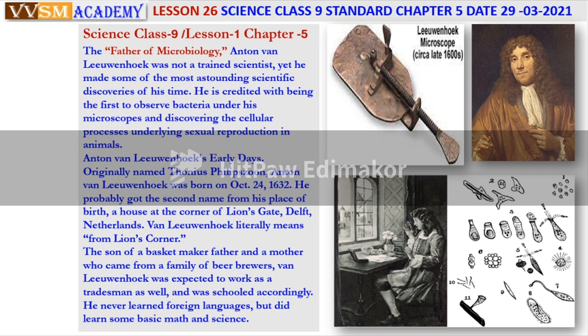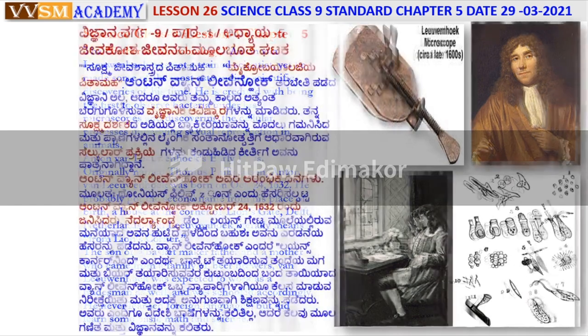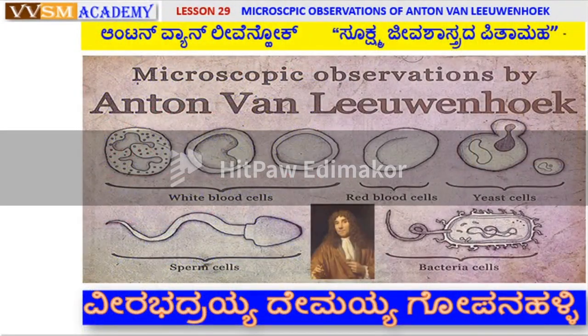I am telling you about Anton van Leeuwenhoek's early days. Originally named Thuis Philipszoon, Anton van Leeuwenhoek was born on October 24, 1632. He probably got his second name from his place of birth — the corner of Lions Gate in the Netherlands. The Netherlands is near Frankfurt, Germany.